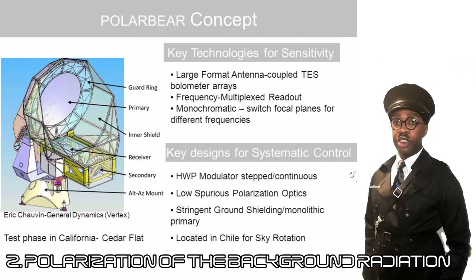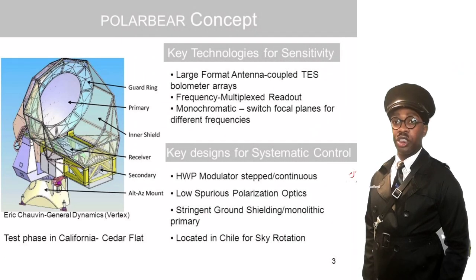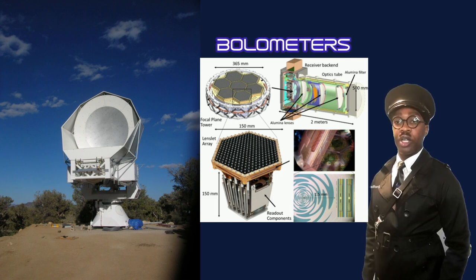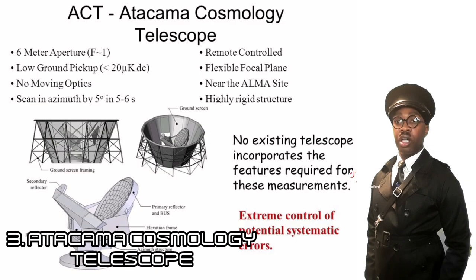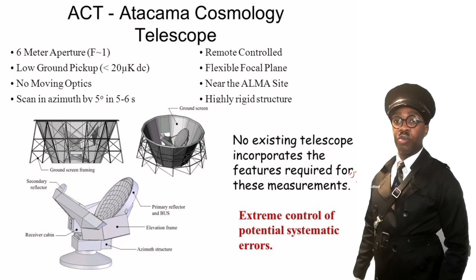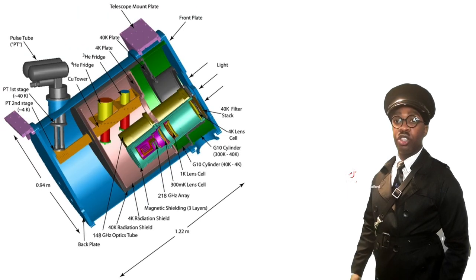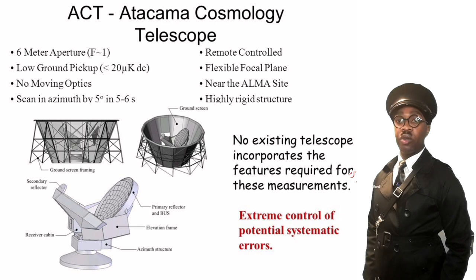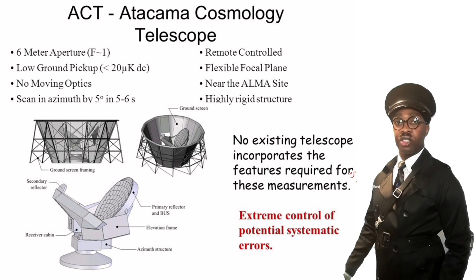Polar Bear, which stands for Polarization of Background Radiation, is a polarization experiment in the Atacama Desert of northern Chile that uses transition edge sensor bolometers to detect cosmic microwave background radiation. The Atacama Cosmology Telescope is a millimeter-wave cosmology telescope that uses cryogenically cooled anti-reflection coated silicon for high-sensitivity observations of cosmic microwave background radiation, allowing precise measurements of particular cosmological parameters. It is also located in Chile's northern Atacama Desert.